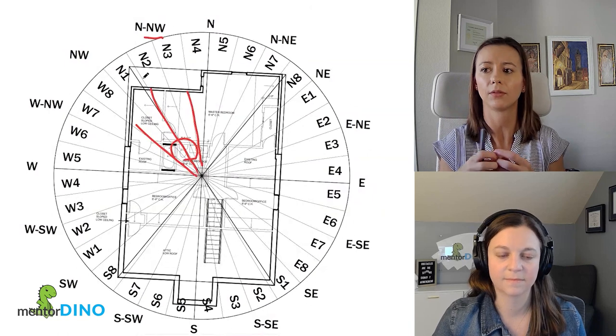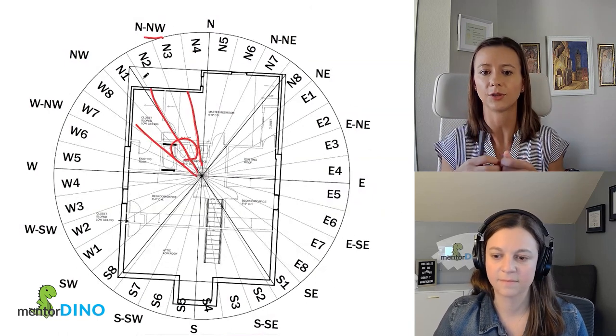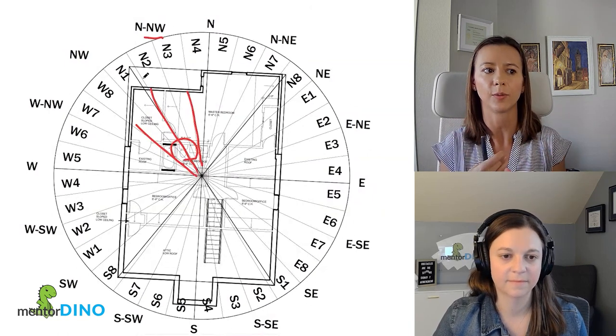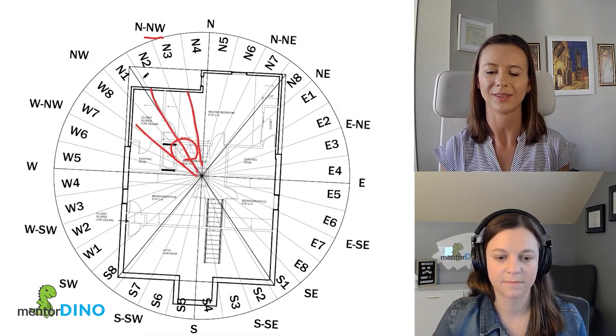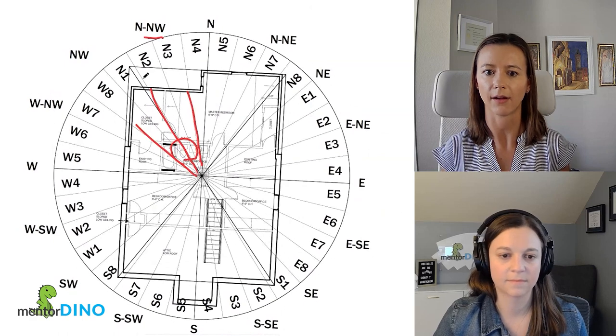for example, this would be an issue we would look at. And then the northwest has to do with banking and support. So that means you're flushing your money away. So these aren't ideal areas to have the toilet.